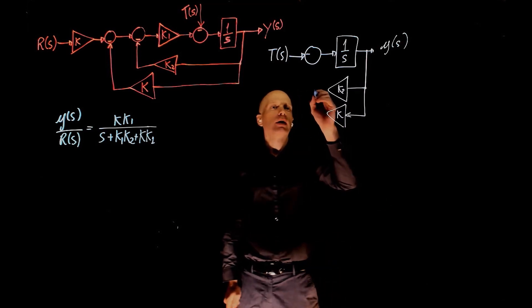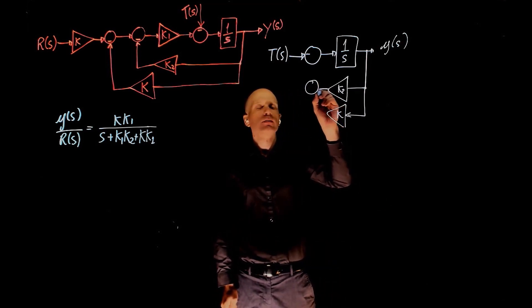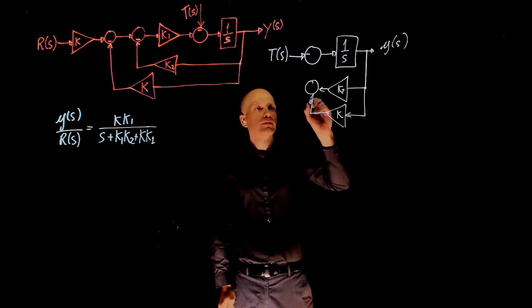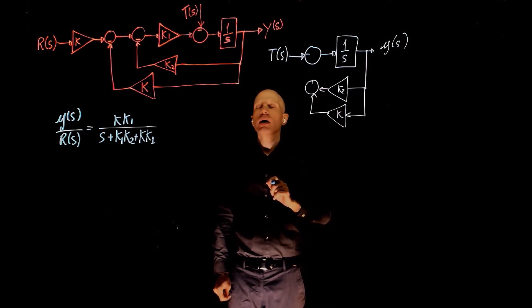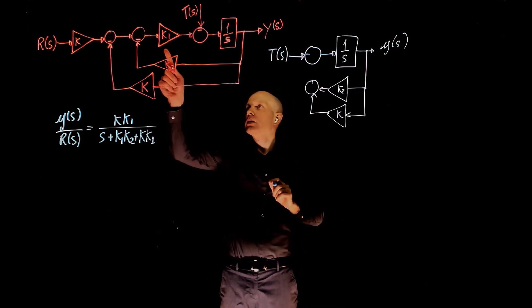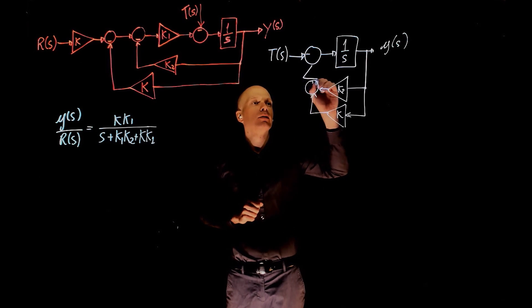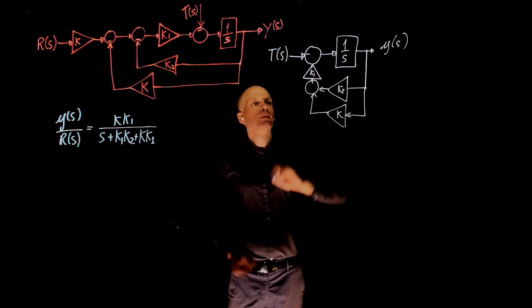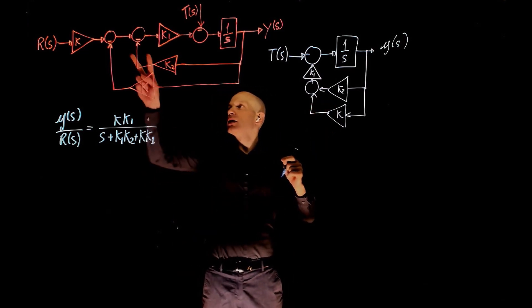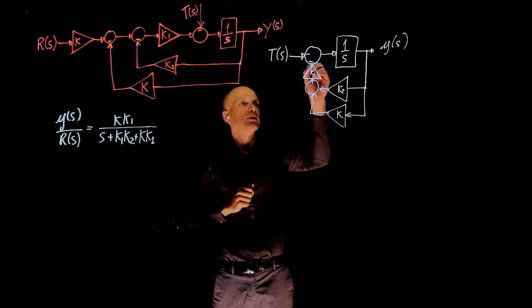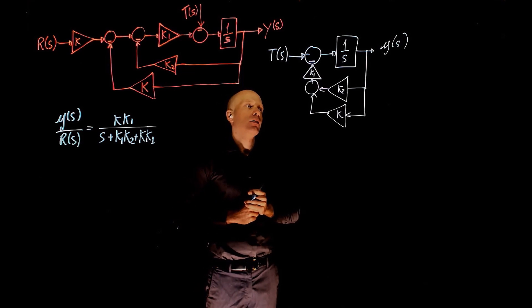They are added together and multiplied by k1, both are multiplied by k1. And now the negative signs that we see here and here, I can transfer that to this sum and that is the same.